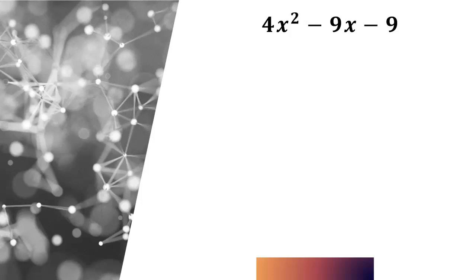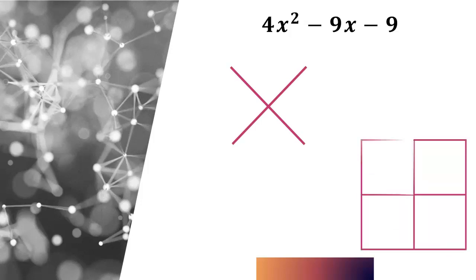Now the reason why we call this the Xbox method is because you're going to use an X and a box. So go ahead and create those two visuals. And what I like to do is I like to start with the box because this is where some people make mistakes. And we're going to put the very first term in the top left corner and the constant in the bottom right corner.